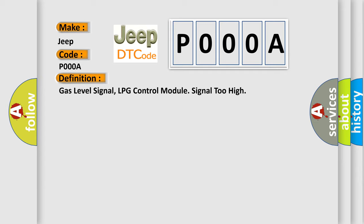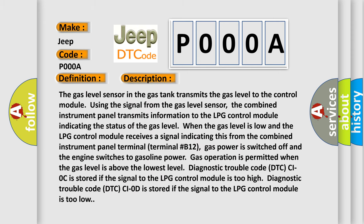And now this is a short description of this DTC code. The gas level sensor in the gas tank transmits the gas level to the control module using the signal from the gas level sensor. The combined instrument panel transmits information to the LPG control module indicating the status of the gas level when the gas level is low, and the LPG control module receives a signal indicating this from the combined instrument panel terminal B12.